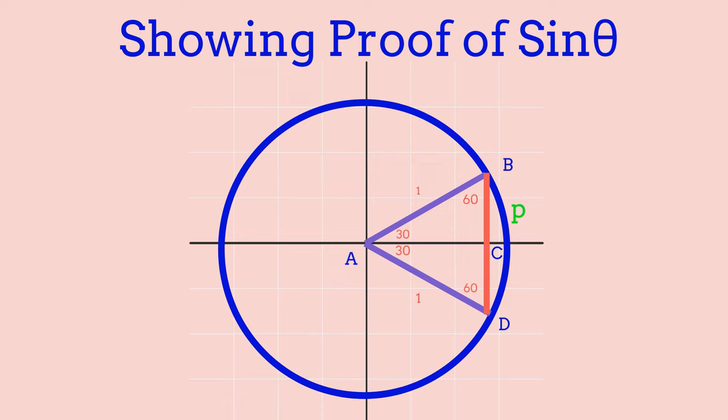Given the radius of the circle is 1, side AB is equal to 1, since we're just moving the radius upwards. Now since we have our first triangle, we duplicate it to make another triangle on the bottom, creating an equilateral triangle where all lengths are the same. Now we need to find the value of sin theta, and we already know sin theta is perpendicular over hypotenuse.